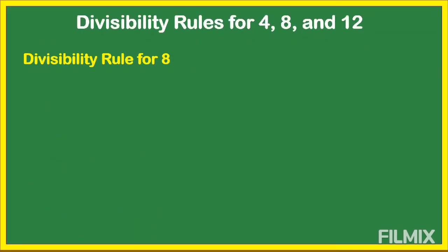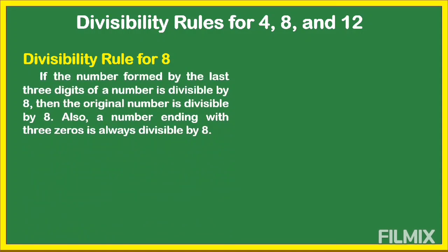Next is the divisibility rule for 8. How do we know that a number is divisible by 8? If the number formed by the last three digits of a number is divisible by 8, then the original number is divisible by 8. Also, a number ending with three zeros is always divisible by 8.